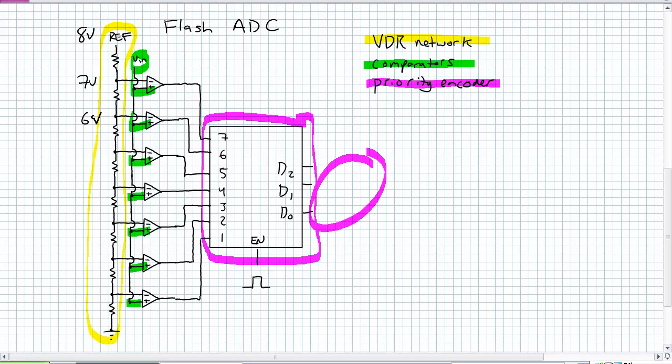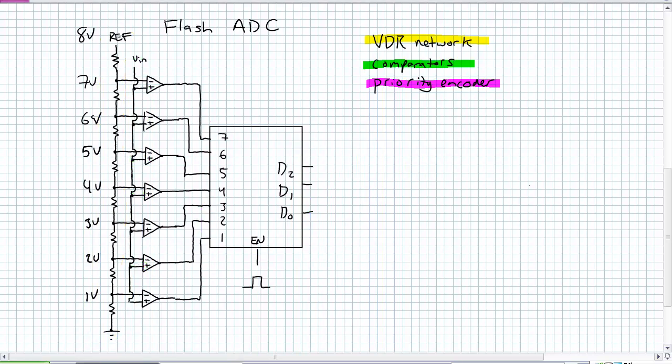Say, for example, I have an analog input voltage of 5.5 volts. Do the analysis for every single comparator. I've cleaned this up here a little bit. Look at the top comparator. Is 5.5 volts greater than 7? The answer is false. Is 5.5 greater than 6? False. Is 5.5 greater than 5? The answer is true, true, true, true, true.